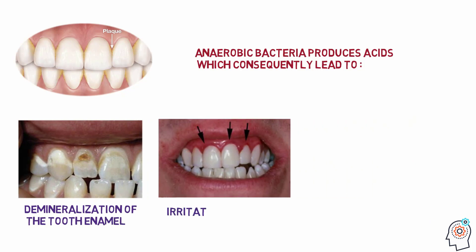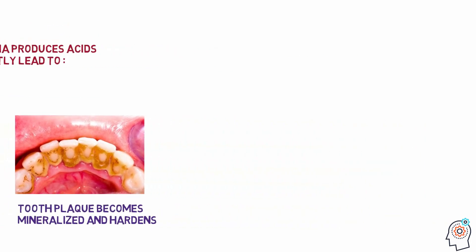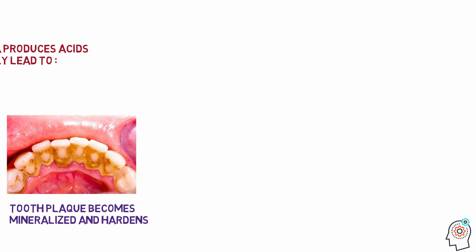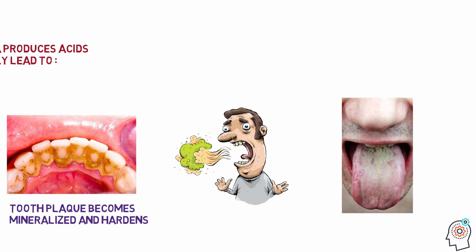Irritation of the gums around the teeth can lead to gingivitis, periodontal disease, and tooth loss. Tooth plaque can become mineralized and harden into calculus, which enables further accumulation of plaque and may promote gum recession. Other dental problems related to dental plaque include bad breath and oral thrush.